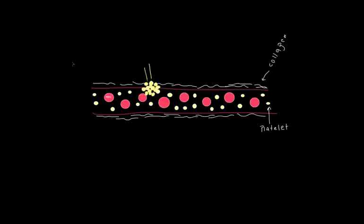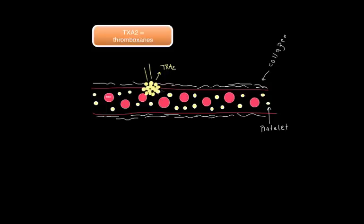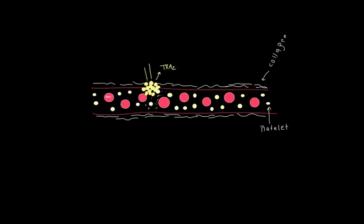As they're clumping or agglutinating together, they start secreting a chemical, a paracrine signal called thromboxanes—TXA2 is the abbreviation. I'm going to draw some little dots of thromboxane here. What this does is attract even more platelets, so we have more and more platelets being attracted to this area by the thromboxane.